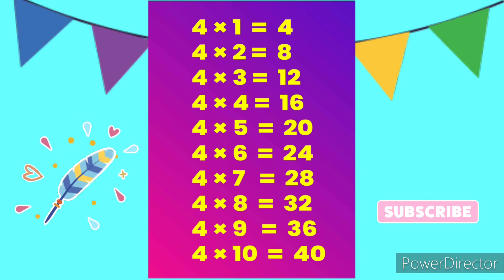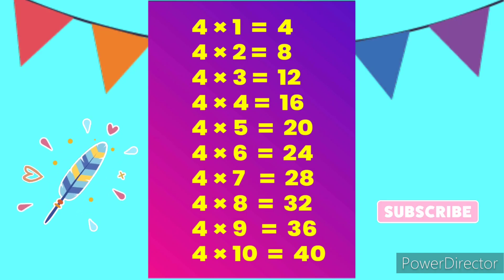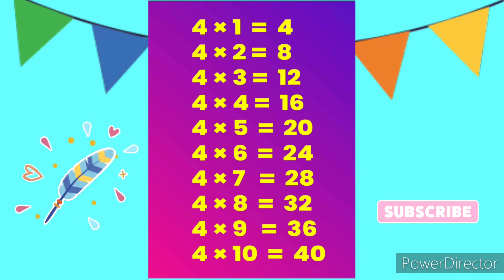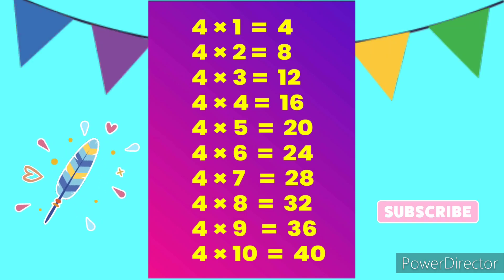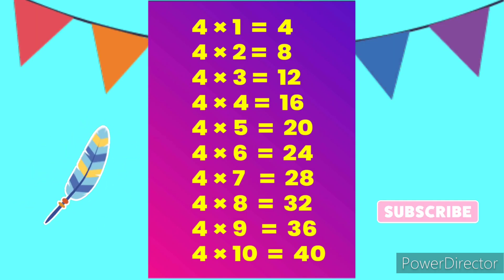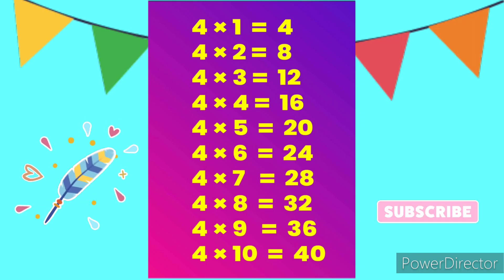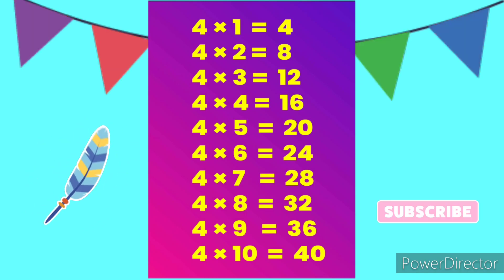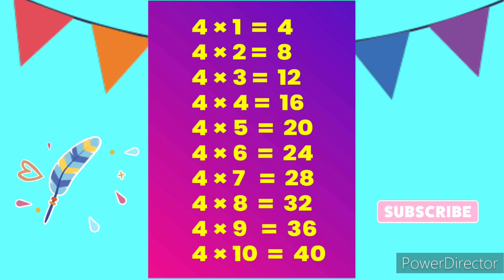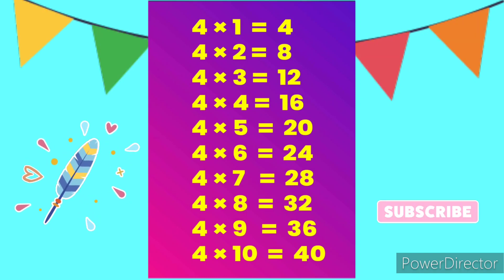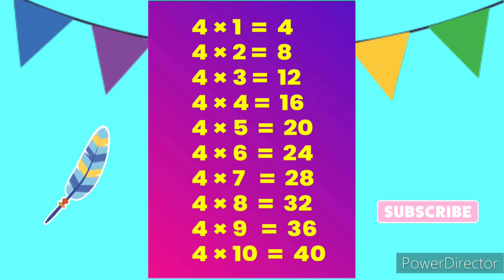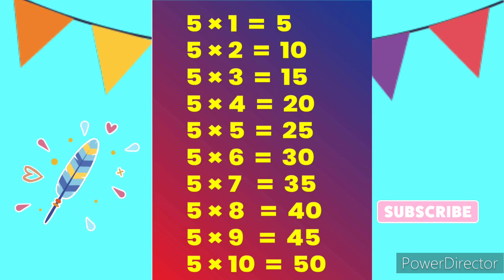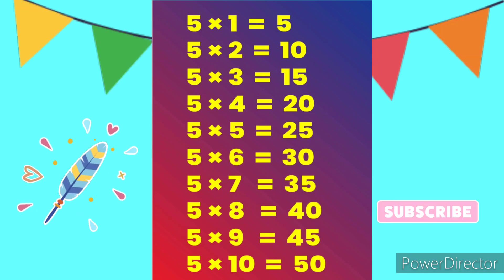4 3s are 12, 4 4s are 16, 4 5s are 20, 4 6s are 24, 4 7s are 28, 4 8s are 32, 4 9s are 36, 4 10s are 40. Table of 5: 5 1s are 5.